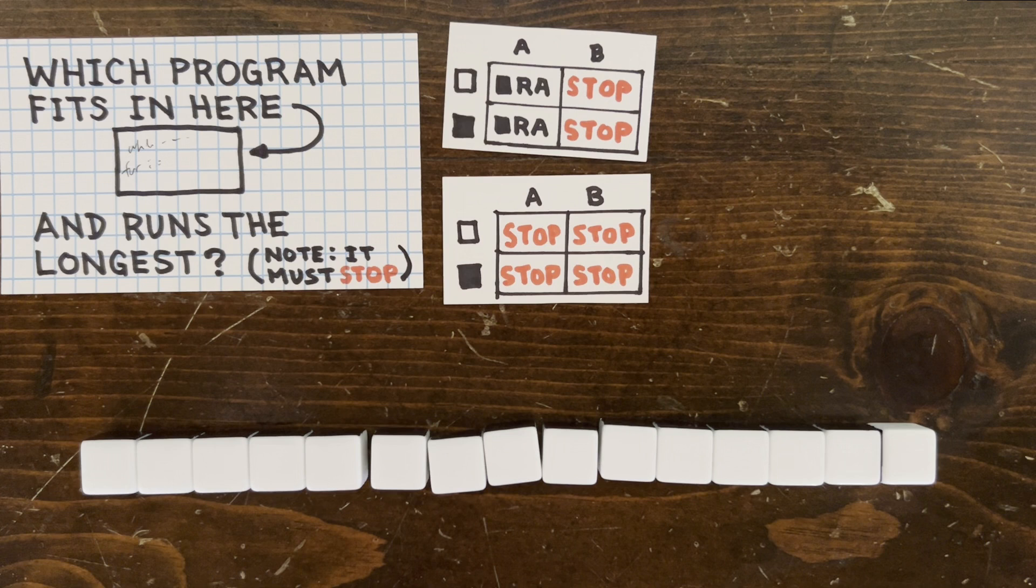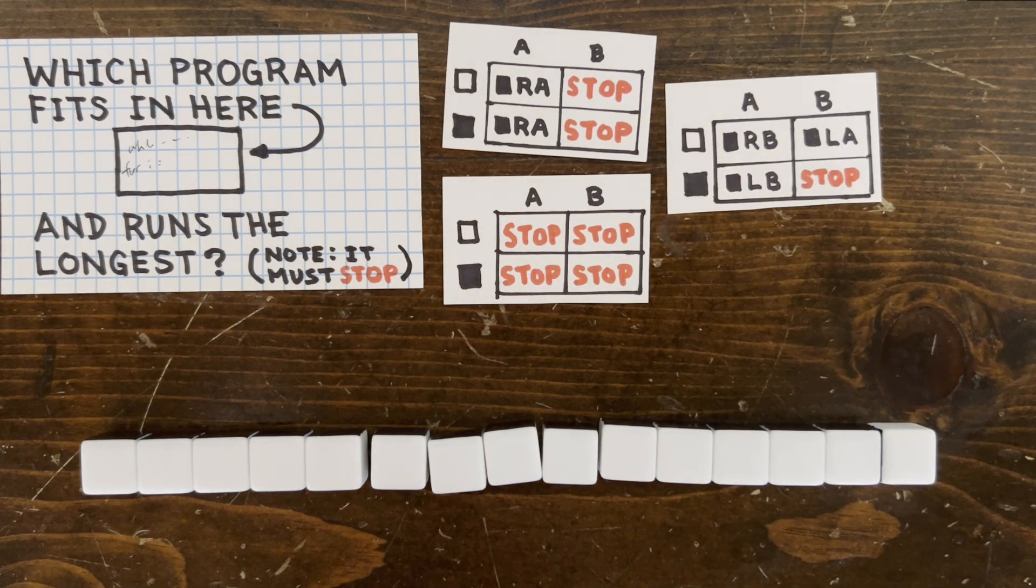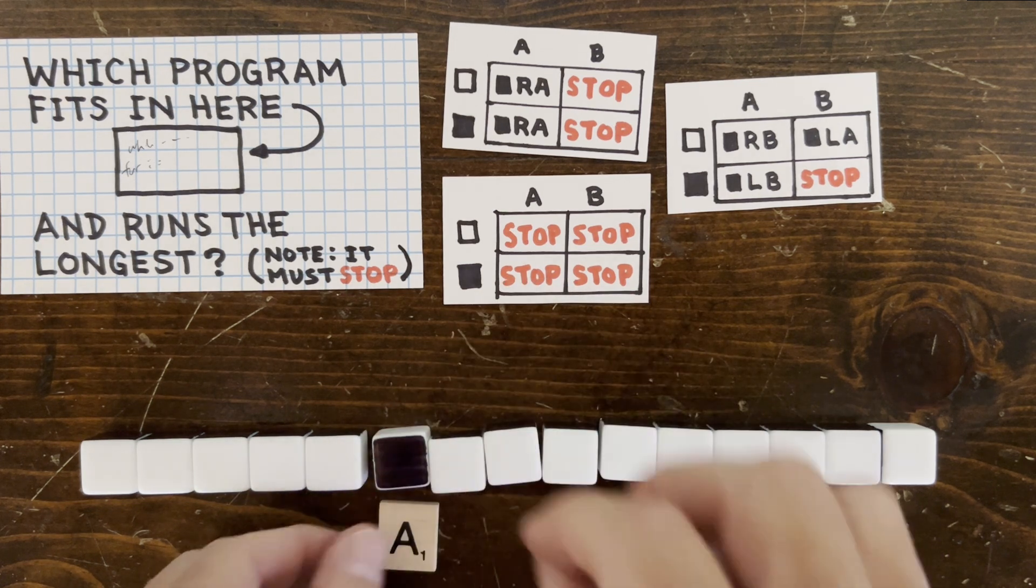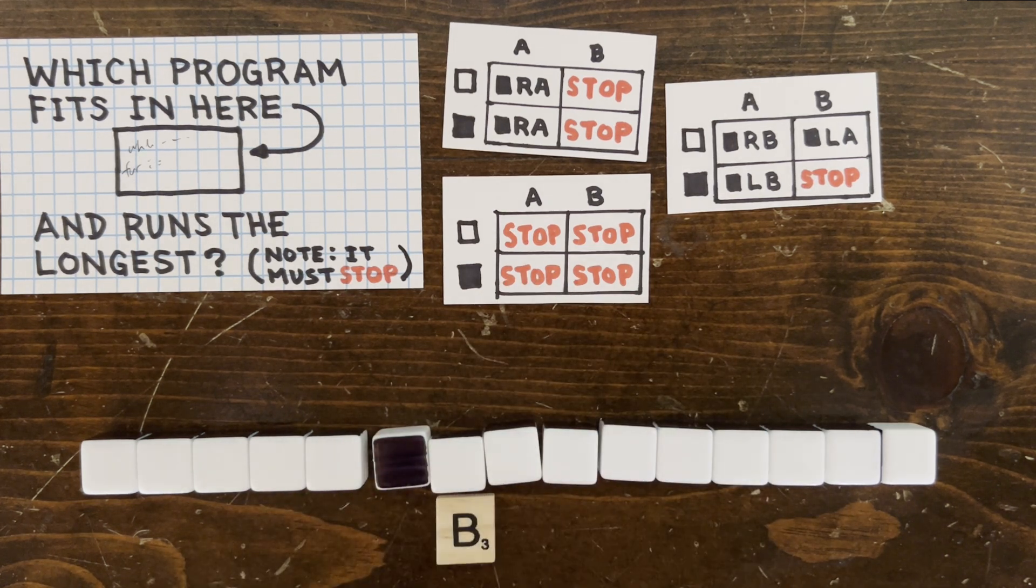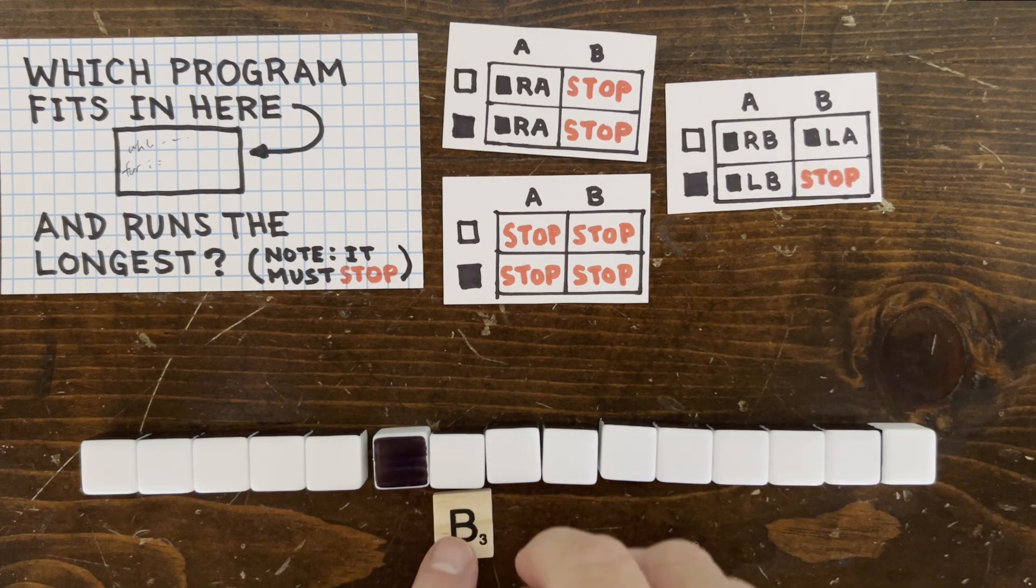If we keep enumerating programs, we'll pretty quickly run into this one. First, we fill with black, move to the right, but switch to state B. Now we're in state B looking at a blank cell, so we fill the cell, move to the left, and switch to state A.